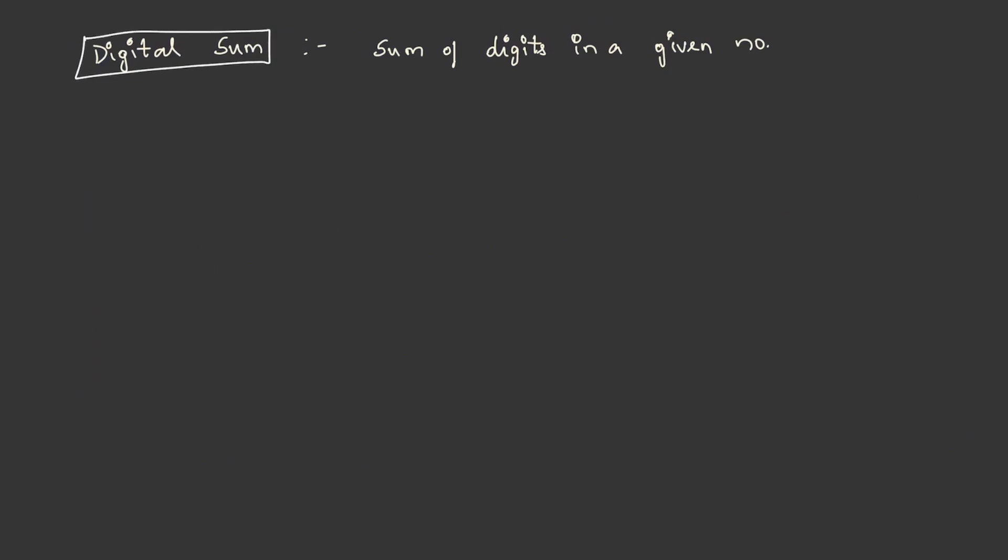Now let us understand the concept of digital sum. It is nothing but sum of digits in a given number. For example, let us take 88 into 888. It is difficult to solve this question directly, but by using digital sum concept, it is pretty easy. Let us know how it works. Let us take the sum of digits of each term. Here, 8 plus 8 is equal to 16 and 8 plus 8 plus 8 is equal to 24. Similarly, 6 plus 1 is 7 and 24 is divided into 2 plus 4 which is equal to 6. Now, 7 into 6 is equal to 42 and sum of 4 and 2 is equal to 6.